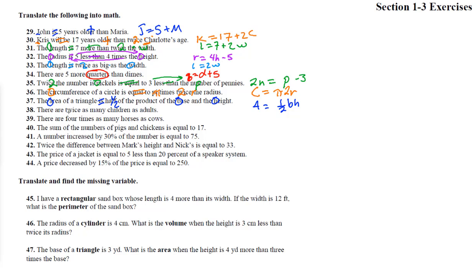Number 38: there are twice as many children as adults. The children are equal to twice the adults — C = 2A. Twice as many children as adults means the children are two times the number of adults. For example, if there are five adults, twice as many children would be ten: 2 × 5 = 10.